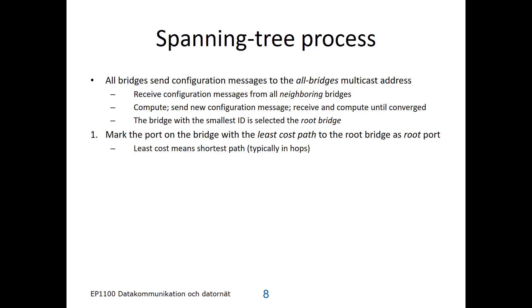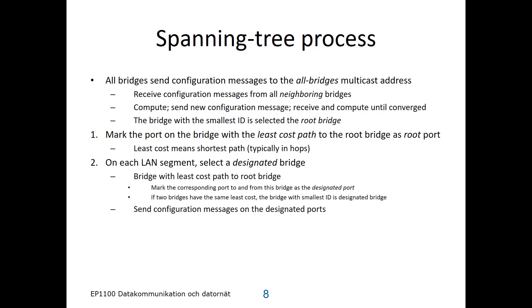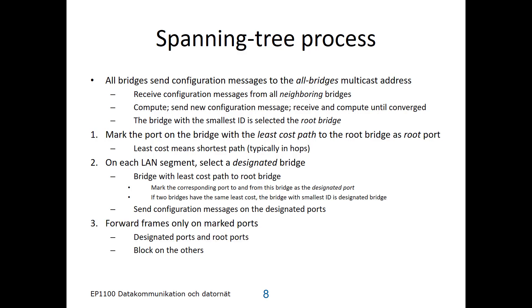When the message exchange has converged, each bridge marks the port with the least cost path to the root bridge as its root port — where least cost means shortest path in number of hops. On each LAN segment the algorithm selects a designated bridge, which is the bridge with the least cost path to the root bridge. The bridge marks all ports to and from this designated bridge as designated ports, and on those ports it sends configuration messages. When traffic starts to flow it will only be forwarded on marked ports — both designated ports and root ports. All other ports will be blocked to avoid loops.